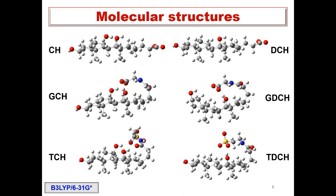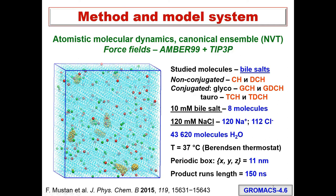We used six different molecules: cholate and deoxycholate — cholate has three hydroxyl groups and deoxycholate has two hydroxyl groups in the hydrophilic head — along with their glycine and taurine conjugated derivatives. We used atomistic molecular dynamics simulations in the canonical ensemble with the AMBER force field for bile salt molecules and TIP3P for water molecules. We placed random molecules in a periodic box with sides of 11 nanometers and ran production runs of around 150 nanoseconds.